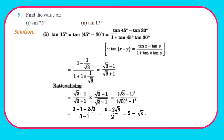Question 5: Find the value of tan(15°). We write 15° = 45° − 30°, so tan(15°) = tan(45° − 30°). Using tan(x−y) = (tanx − tany)/(1 + tanx tany): (1 − 1/√3)/(1 + 1·1/√3) = (√3 − 1)/(√3 + 1). Rationalizing by multiplying by (√3 − 1)/(√3 − 1): (√3 − 1)²/(3 − 1) = (4 − 2√3)/2 = 2 − √3. Pause and note down the solution.